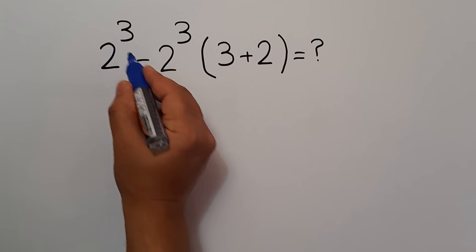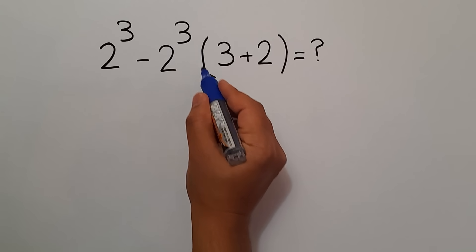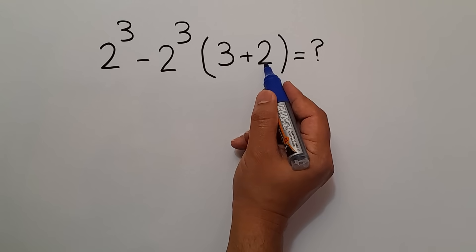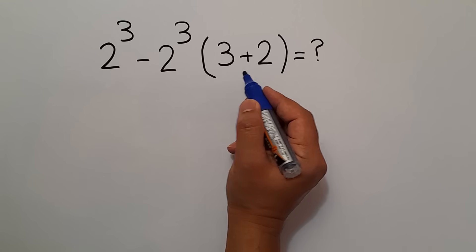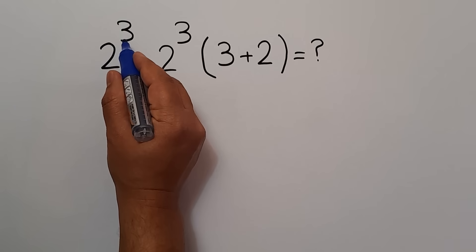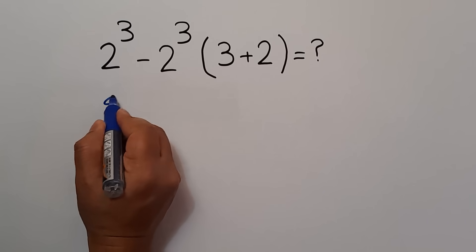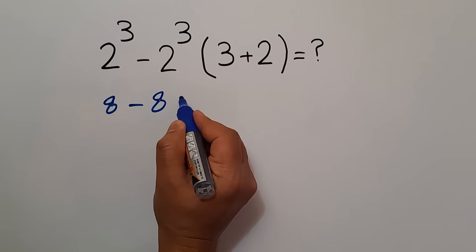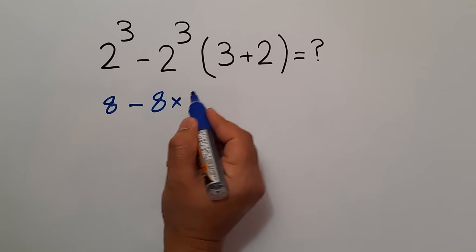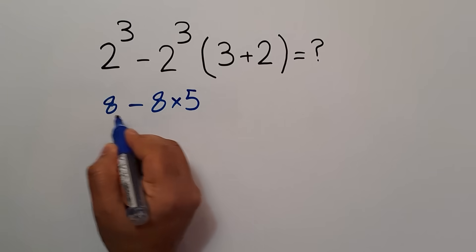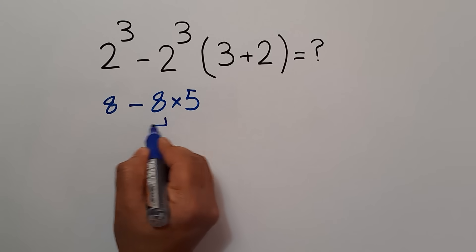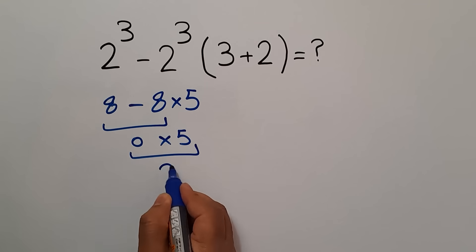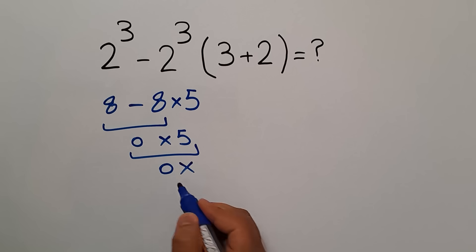Next problem: 2 cubed minus 2 cubed, then times parentheses 3 plus 2. Are you ready to solve? Let's get started. A common mistake: 2 cubed gives us 8, so 8 minus 8 equals 0, and 0 times 5 is just 0 — but this answer is not correct.